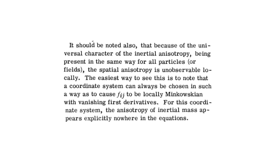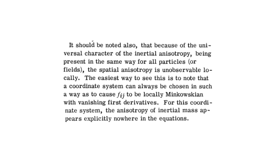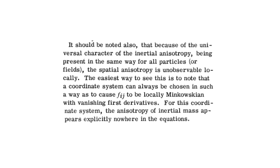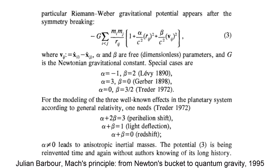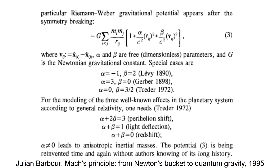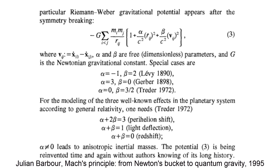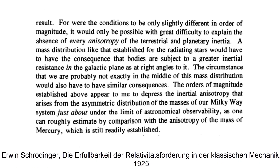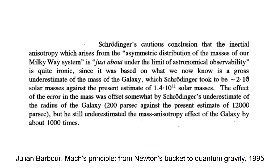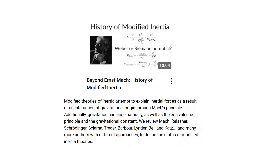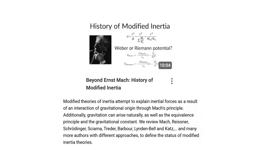His argument, however, depends on the requirement that the coordinate system can always be chosen to be locally Minkowskian, as is usually assumed in standard general relativity. Hans-Jürgen Träder was the first to propose a model unifying inertia and gravity under Machian ideas without anisotropic inertial mass. Schrödinger noted in 1925 the problem of inertial mass anisotropy in his model, but avoided it by the low and underestimated mass of the Milky Way considered at the time. We briefly covered his work in our video 'History of Modified Inertia.'